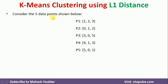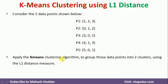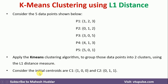Consider the five data points P1, P2, P3, P4, and P5, which are in three-dimensional space. We need to apply the K-means clustering algorithm to group these data points into two clusters using the L1 distance measure. Consider the initial centroids as C1 = (1,0,0) and C2 = (0,1,1). Sometimes centroids will not be given; in that case, you can randomly select two centroids and continue with the calculation.